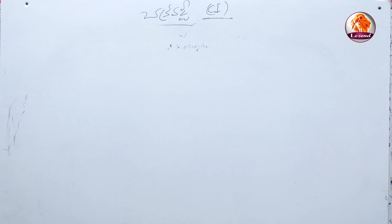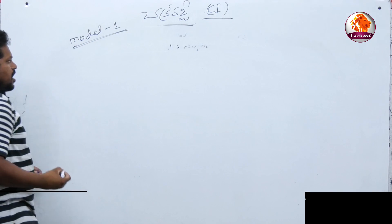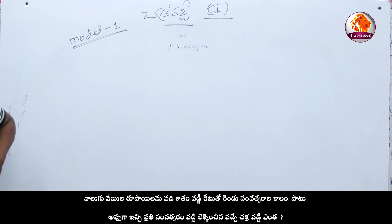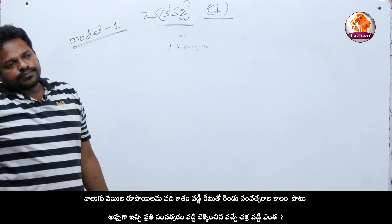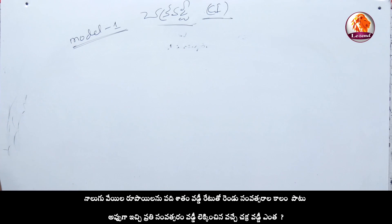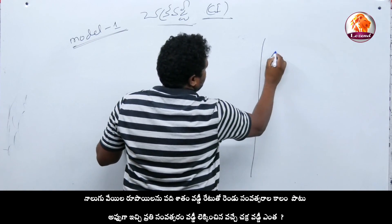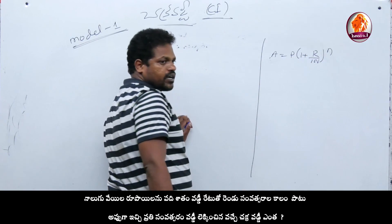First problem, first model, model number one. 4th level, Adishatam, first model, 2 months in time. First of all, through formula — A is equal to P of 1 plus R by 100 all to the power N.